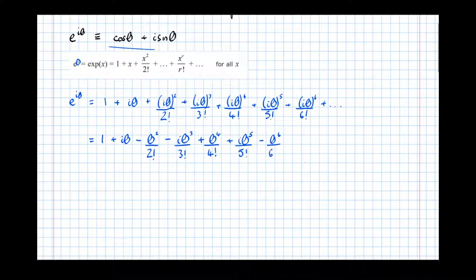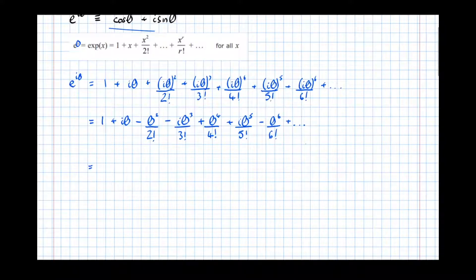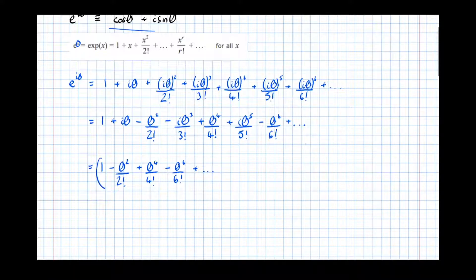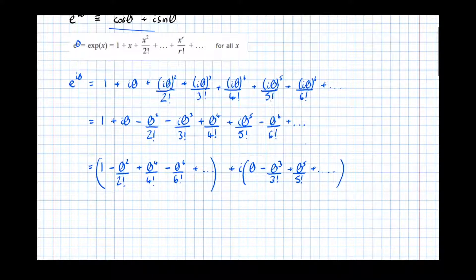Continuing: minus theta to the power of 6 over 6 factorial, and so on. So what I'm going to do now is separate out the real and imaginary parts. The real part is: 1 minus theta squared over 2 factorial plus theta to the power of 4 over 4 factorial minus theta to the 6 over 6 factorial, and so on. The imaginary part is: theta minus theta cubed over 3 factorial plus theta to the 5 over 5 factorial, and so on. So all the even powers are real, and all the odd powers are imaginary.